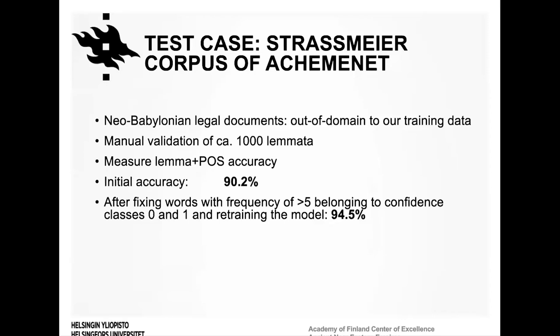We trained a new model with the initial training data plus these corrections to see how well the model generalizes. After manually fixing 3.8% of words, we achieved a 4.3% improvement in lemmatization and POS-tagging accuracy, raising the total accuracy to 94.5% — exceeding the accuracy observed in our initial evaluation on ORACC data.